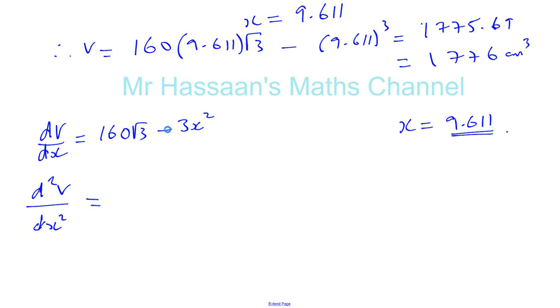Okay, now if you differentiate this a second time, you're going to get minus 6X. Okay, and when you substitute X into... X equals 9.611 into this second differential, the second differential is going to be minus 6 times 9.611. So we can see that this is going to give us something that's negative.